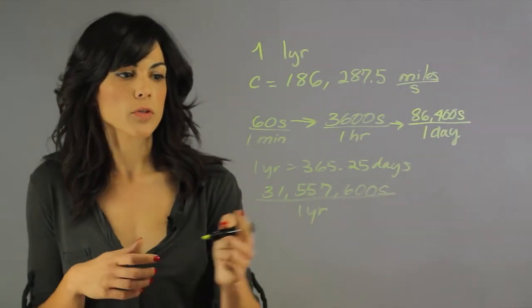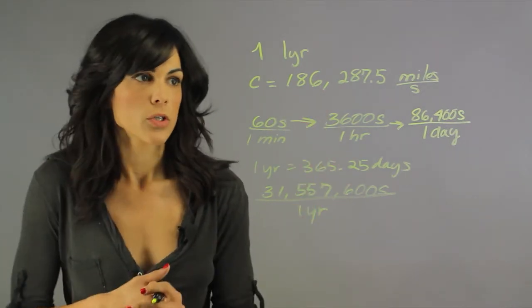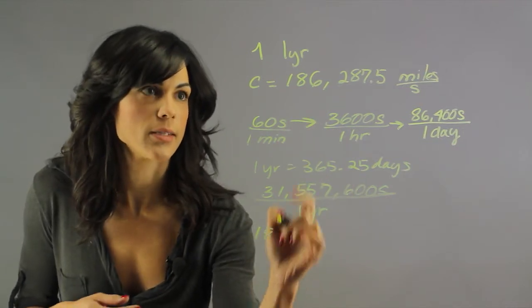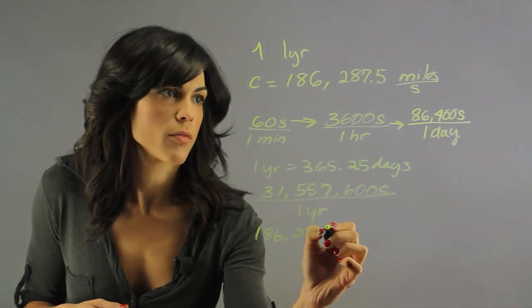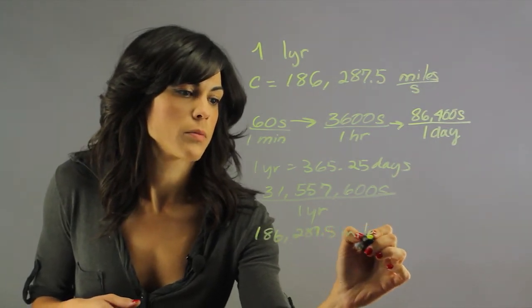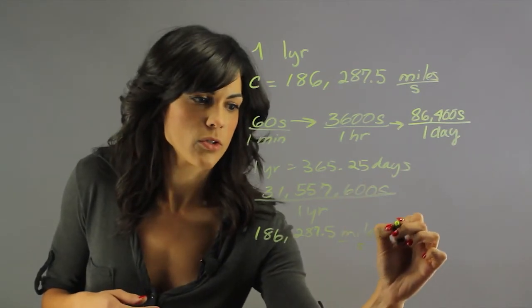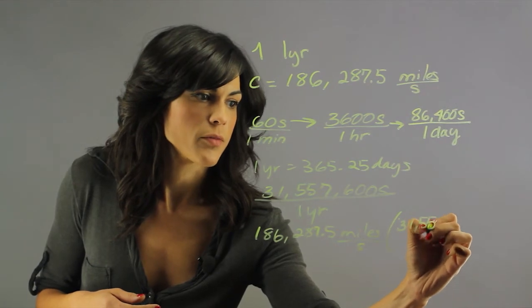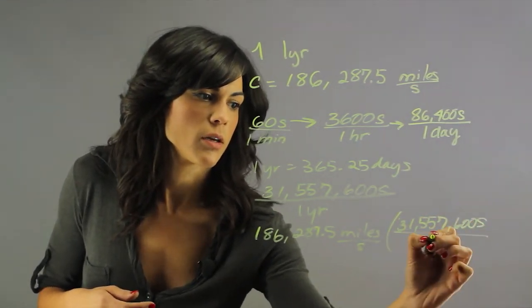Now, if we multiply it by our light speed, it will actually give us the number of miles. So the way to do this is to multiply it. We have 186,287.5 miles per second. And here we have seconds, so let's bring seconds to the top. So 31,557,600 seconds in one year.